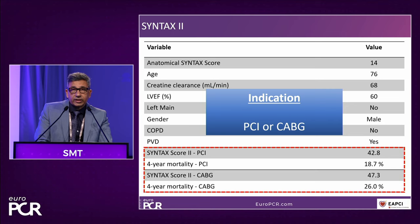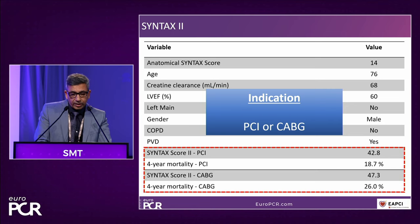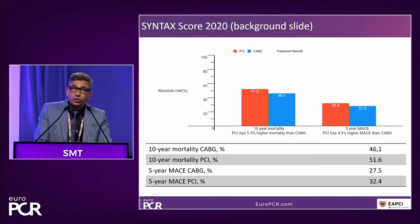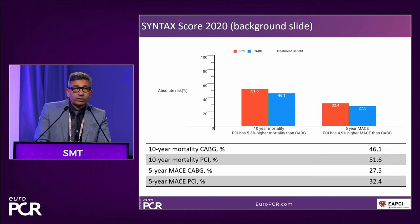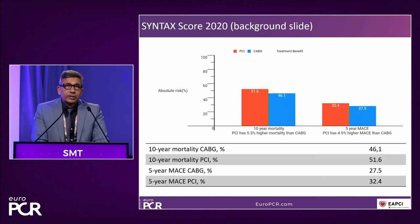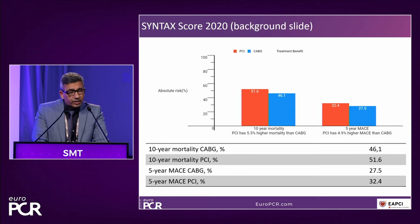The decision is between the heart team for PCI or CABG. We also calculated Syntax Score 2020, which showed a 10-year mortality for CABG of 46.1% and PCI of 51.6%, based on the Syntax trial — slightly favoring surgery. In summary: a 76-year-old patient, multiple risk factors, three-vessel disease, reasonably normal LV function with mild lateral wall hypokinesis, slightly raised troponin, and a syntax score favoring PCI for at least Syntax Score 1 and 2.